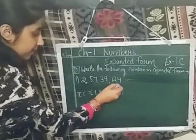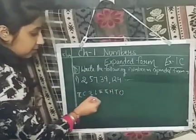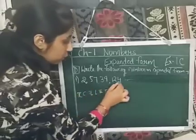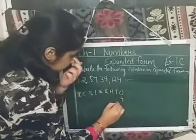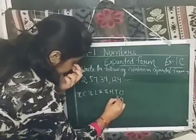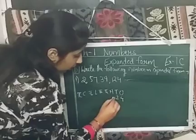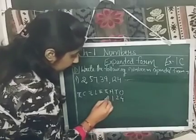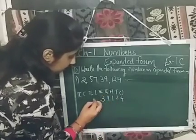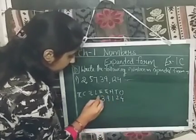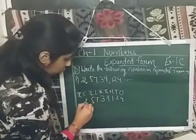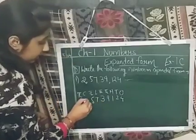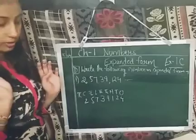I will place this number in their places. So first: four, two, one, nine, three, seven, five, two. And no number in ten crores.